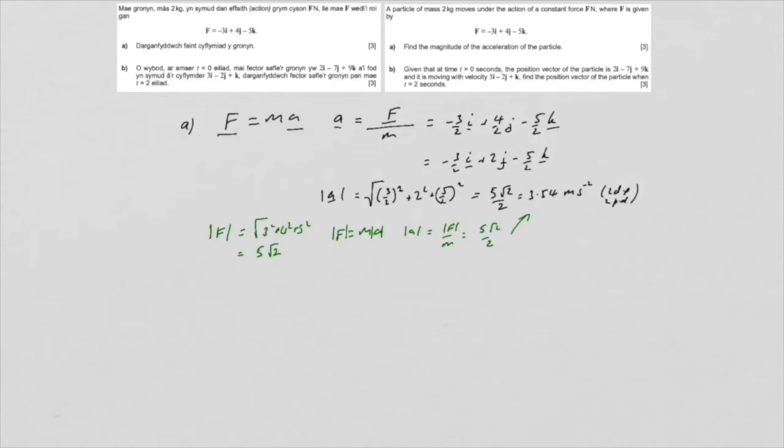Now, there are two ways of doing part B as well. The first way is to use SUVAT. So we have S as a vector equals U vector T plus a half A vector T squared. And what are our SUVAT values?